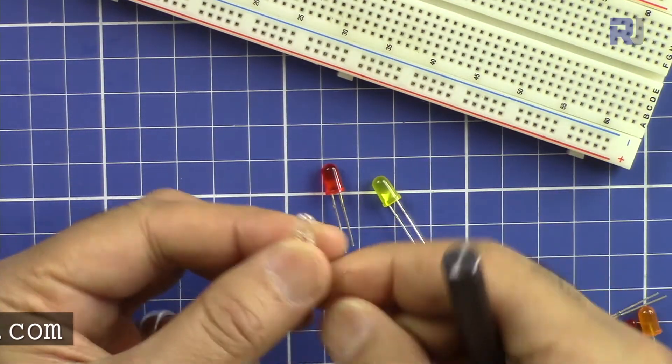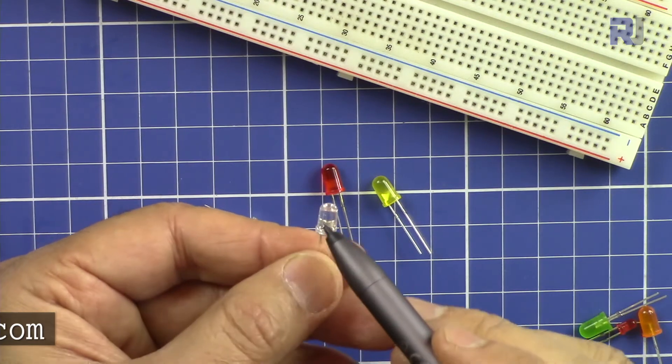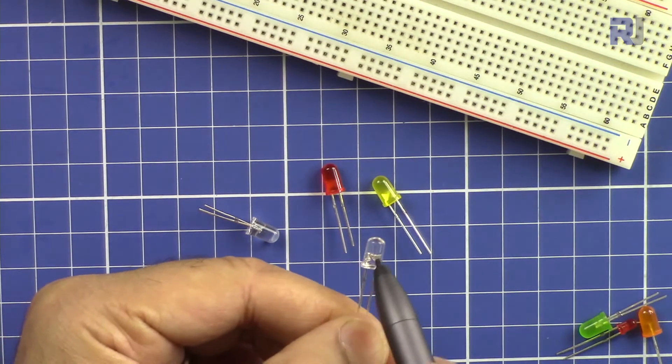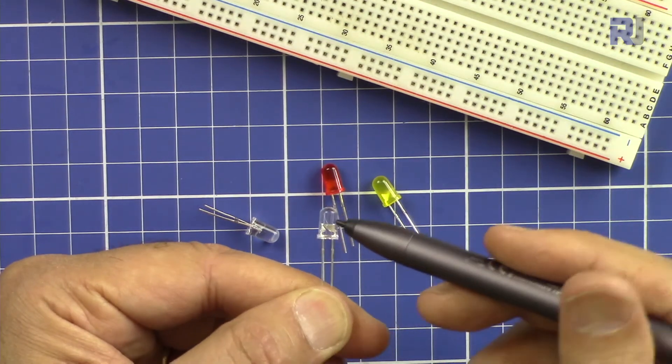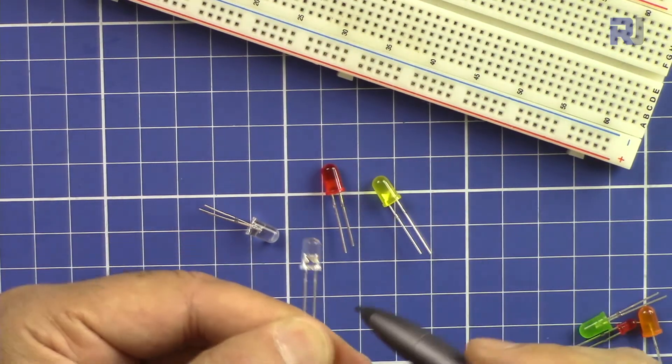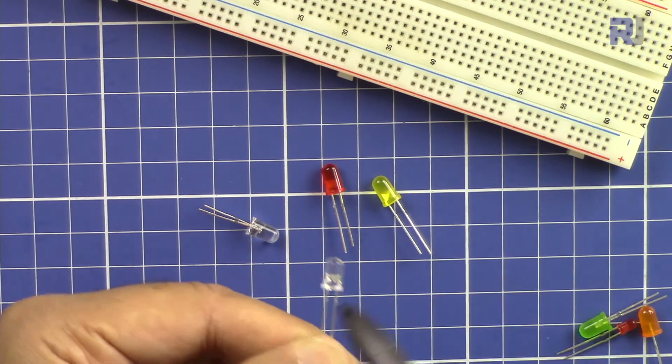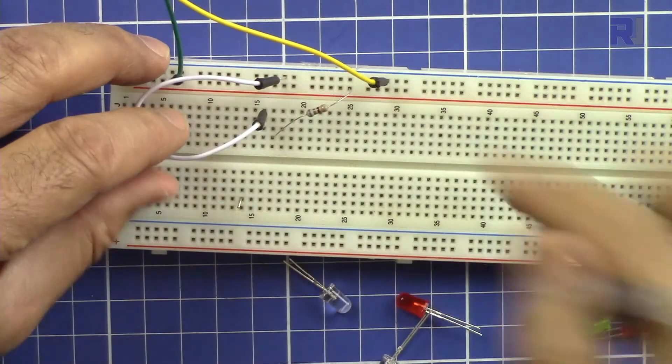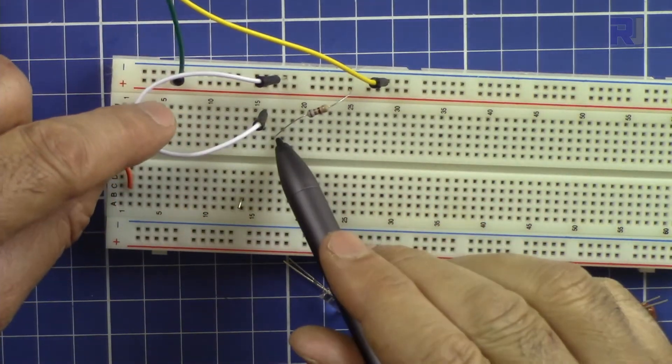But also you can identify it by looking at the shape inside the LED if you can see it. The longer one is just a piece and the shorter one is like an anchor. This is the piece and the light is between the two.